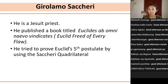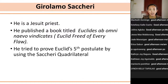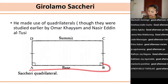The next person who tried to prove the fifth postulate of Euclid is a Jesuit priest, Girolamo Saccheri. Saccheri published a book titled Euclides ab Omni Naevo Vindicatus — 'Euclid Freed of Every Flaw.' He tried to prove Euclid's fifth postulate by using what we now call the Saccheri quadrilateral. He made use of quadrilaterals, though these had already been studied earlier by the Arabic mathematicians Omar Khayyam and Nasir al-Din al-Tusi. He constructed the Saccheri quadrilateral starting with a line segment AB.